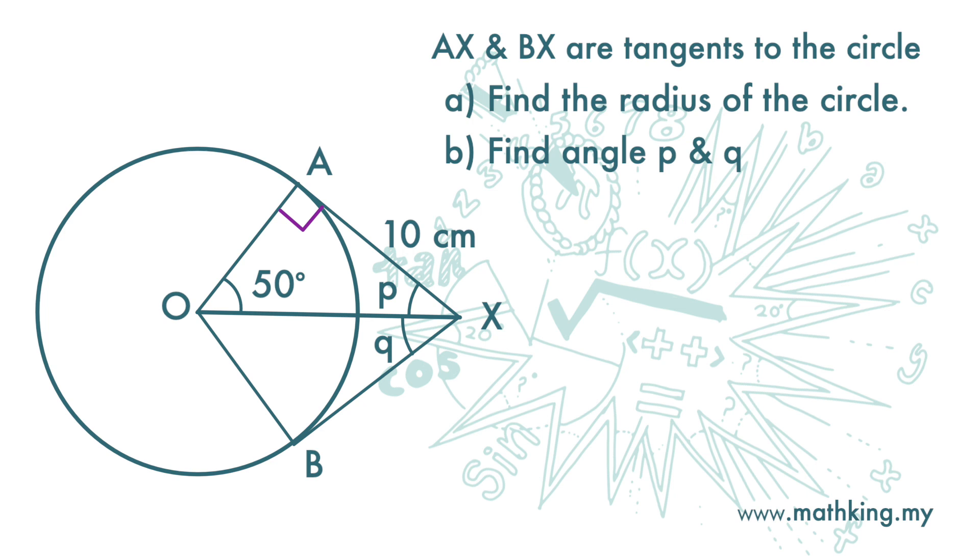Next we want to find P. Let's look at this triangle. It is a right angle triangle with 90 degrees here at A. So the sum of angle P and 50 degrees is 90 degrees. So P is 90 minus 50, and that is 40 degrees.